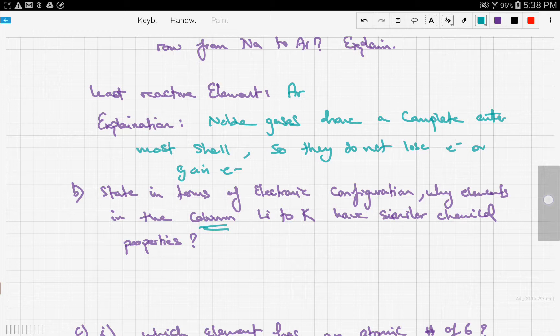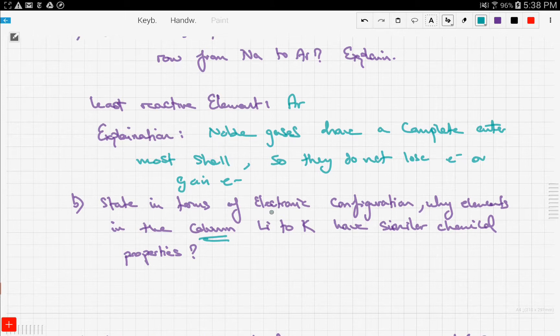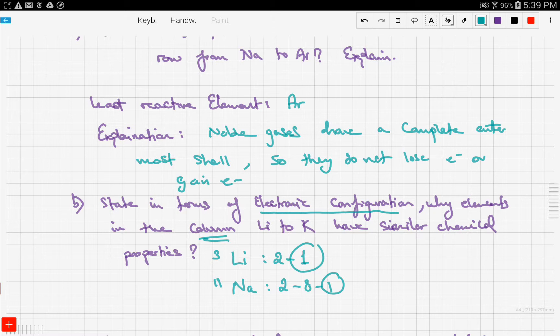properties? He specifically asked in terms of electronic configuration. Let's take lithium: lithium is number 3 and has two electrons in the first layer and one electron in the outermost layer. Sodium is number 11 and has an electronic configuration of 2-8-1. Both have one electron in their outermost shell.